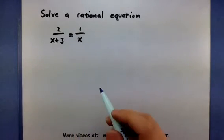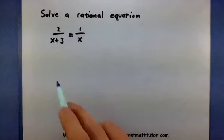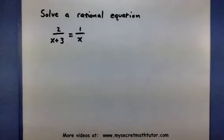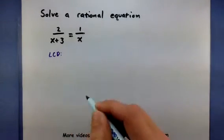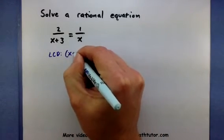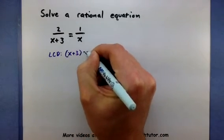If we look at the two fractions here, I can see that I have a denominator of x plus 3 and another denominator with an x. This would make my lowest common denominator x plus 3 times x.